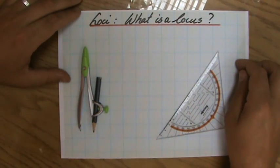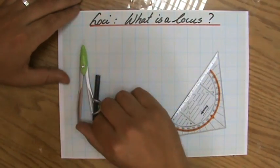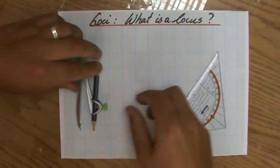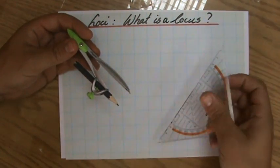Welcome to this playlist about loci, which is plural for locus, by the way. And it will involve a lot of construction. As you can see, I have my compass ready, I have my protractor ready.